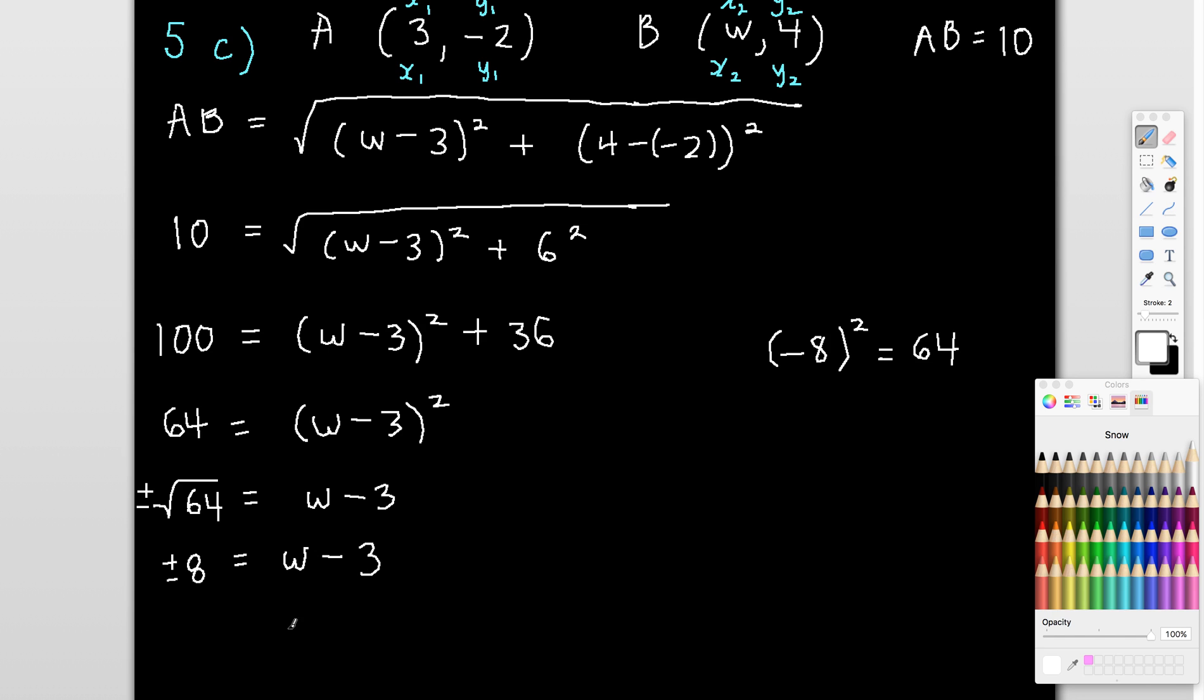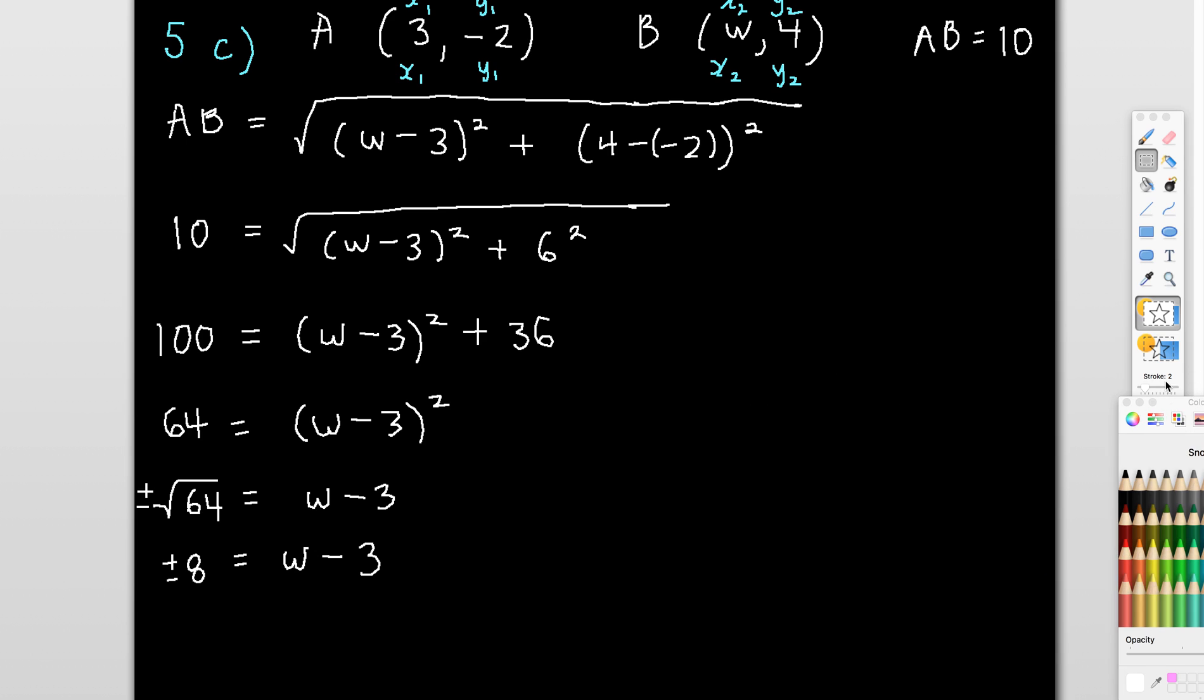Now, from there, I'm going to get two answers. I'm going to split this into two. I'll just move this out of the way. To keep this fairly neat is I'm going to split this into two. So my final part of my final workings, just over here, I'll start with a positive 8. So 8 equals w minus 3. Therefore, w is 11. Or negative 8 is w minus 3. Therefore, negative 8 plus 3, so negative 5.